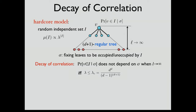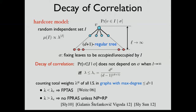If the parameter lambda is above this threshold, there is always long-range correlation. An amazing connection to computer science is that this physical phase transition phenomenon in the infinite regular structure actually coincides with the transition of computational complexity for approximate counting on finite graphs of bounded maximum degree. This talk is about this beautiful connection from the algorithm side and in spin systems, where the hardcore model is a special case.